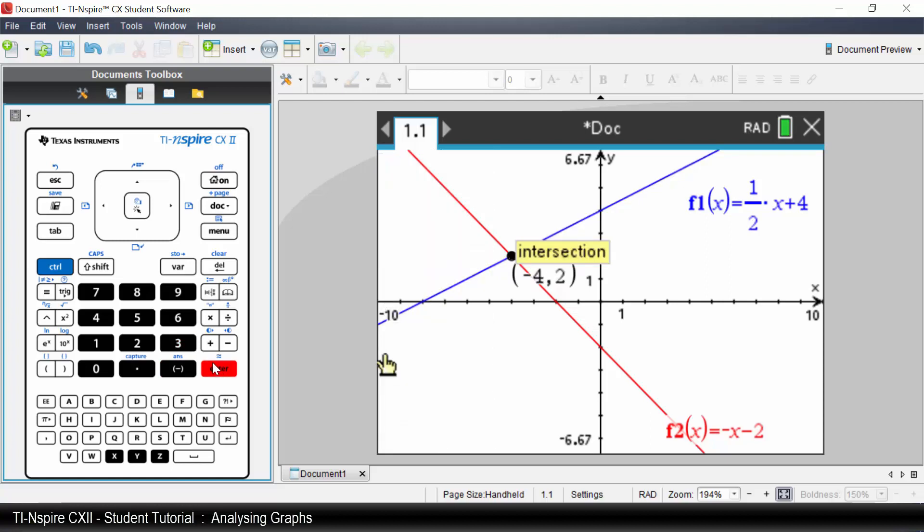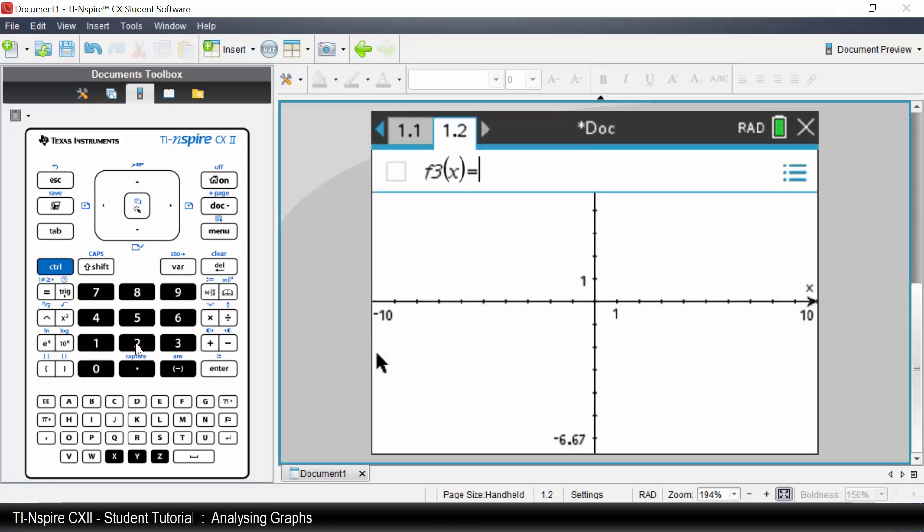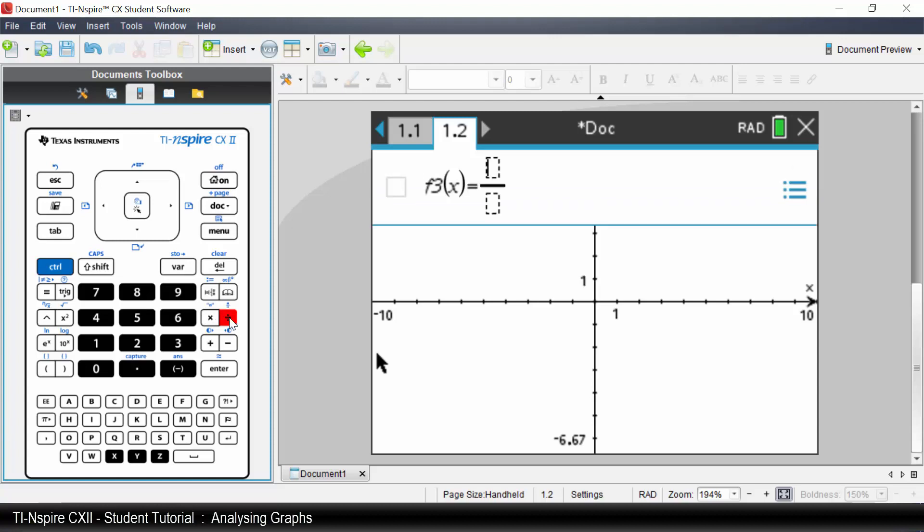Insert a new Graphs application. Select Add Graphs. We are going to graph x cubed over 4, subtract x squared, subtract x and add 4. Ctrl Divide for the fraction template. Press Enter.